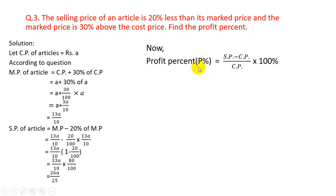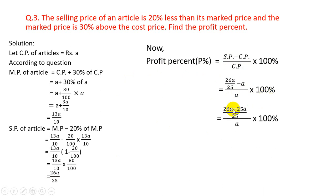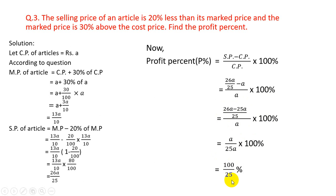Now profit% = (SP − CP)/CP × 100%. SP = 26A/25 and CP = A. So profit% = (26A/25 − A)/A × 100% = (26A − 25A)/(25A) × 100% = A/(25A) × 100% = 100/25 = 4%. Hence 4% is the answer.